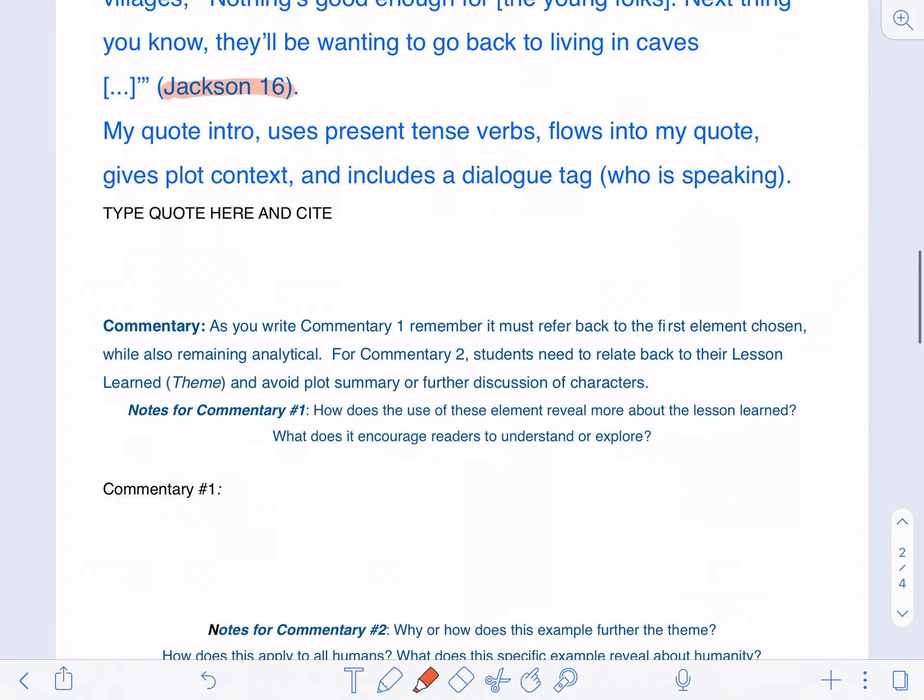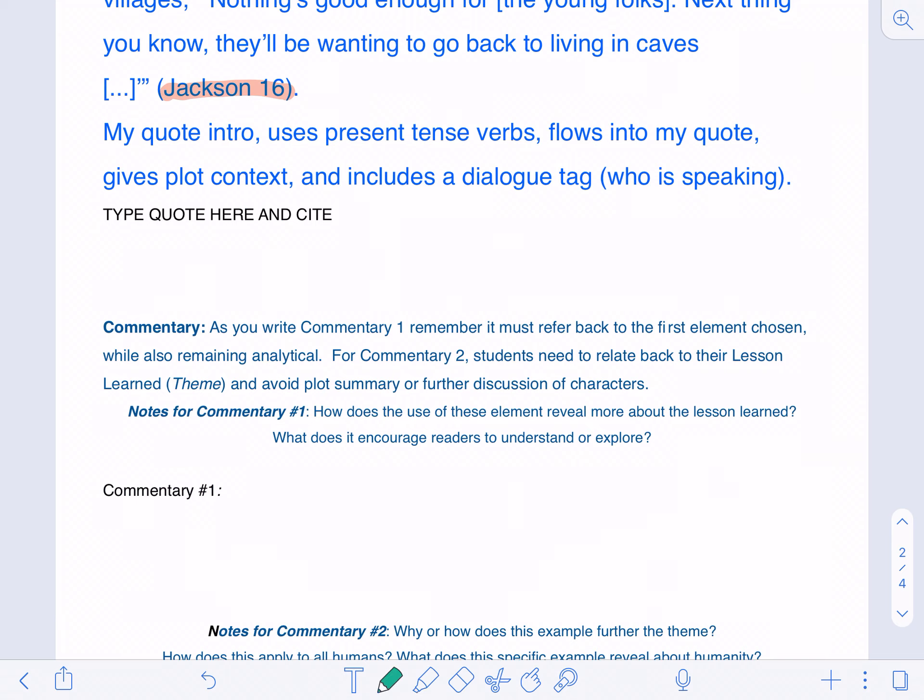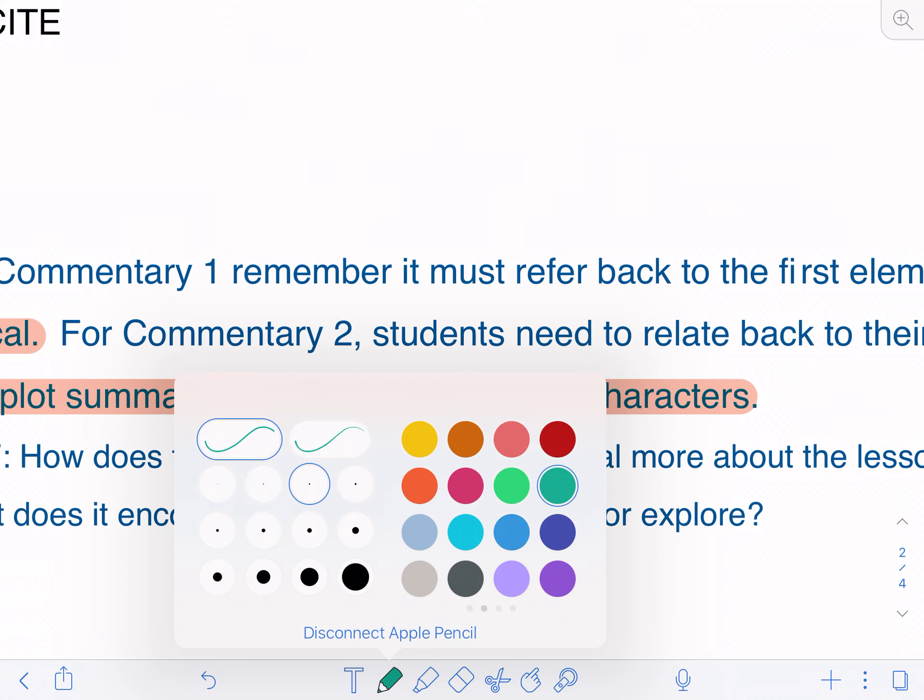This is my example here for you guys based on yesterday's lesson. Commentary one needs to include an analysis of the example from the book that you just provided. I'm going to read the directions and we'll go over how you should be forming it. As you write commentary one, remember it must refer back to the first element chosen while also remaining analytical. Let's go ahead and highlight that. For commentary two, students need to relate back to their lesson learned and avoid plot summary or further discussion of characters. Notes for commentary one: How does the use of this element reveal more about the lesson learned? What does it encourage readers to understand or explore?